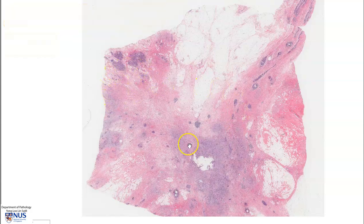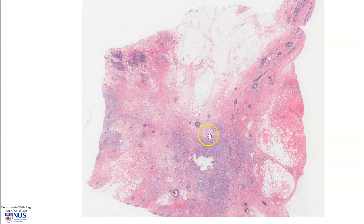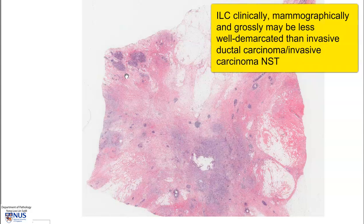On this low power view, we can see that it is not as well circumscribed or well defined as invasive carcinoma NST, no special type, or invasive ductal carcinoma. This kind of has a more subtle appearance and is a bit more difficult to make out the outline of the invasive tumor. Hence, the clinical presentation is usually not that of a very well defined hard mass. It presents more of an area of thickening or induration, and sometimes it is also not so well defined in mammographic images.